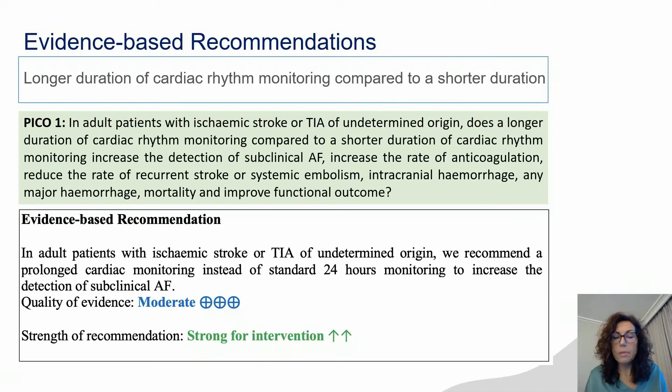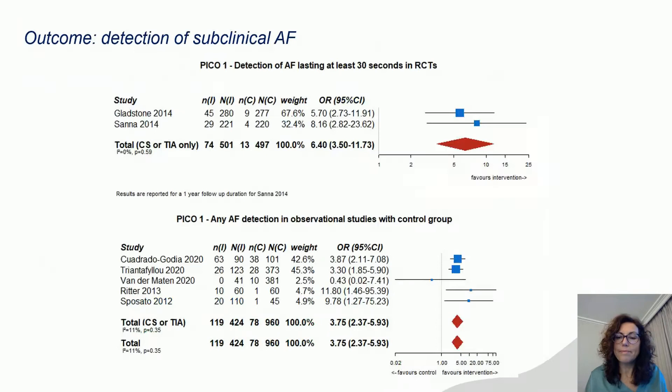Our first PICO was about the duration of cardiac rhythm monitoring. Our recommendation is that in adult patients with ischemic stroke or TIA of indeterminate origin, we recommend prolonged cardiac monitoring beyond the standard 24 hours to increase the detection of subclinical AF, with a moderate quality of evidence and a strong recommendation. This is mainly based on two randomized clinical trials: CRYSTAL-AF and EMBRACE.